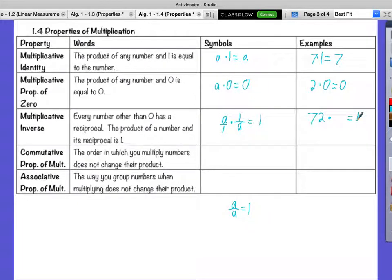72 times one specific number will equal 1. 1 over 72. 72 times 1 over 72.